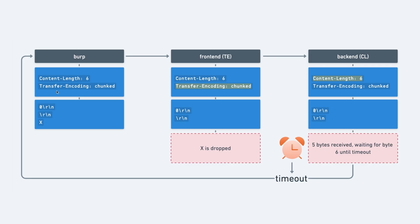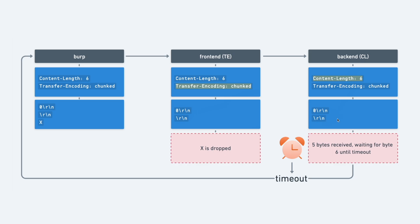When we follow up with the second request, the frontend — using transfer-encoding chunked — sees the X after the terminating chunk and drops it, then forwards the request to the backend. The backend, if using content-length set to six, receives only five bytes of content. So it waits for byte number six until it times out. If we get back a timeout error, that's a very strong indication that this endpoint is vulnerable to a TECL attack.